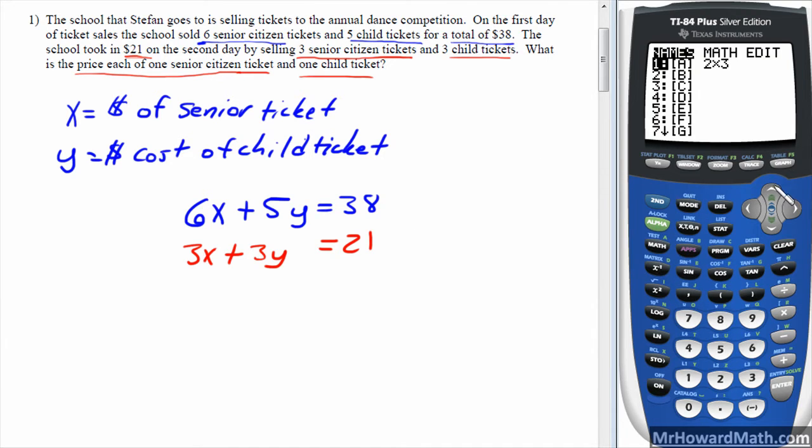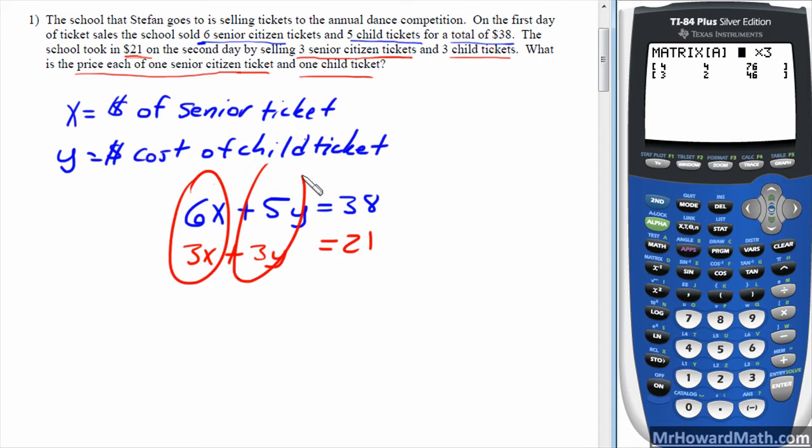So we'll use matrix here, second matrix, over to edit. We'll hit enter here. And then remember that when we use matrix, we need a 2x3 matrix. That's two rows, one, row one, row two, and three columns. One, two, three columns. You want to make sure your equations are stacked. X over X, Y over Y, equal sign over equal sign, and number over number. If not, then you need to rearrange them.